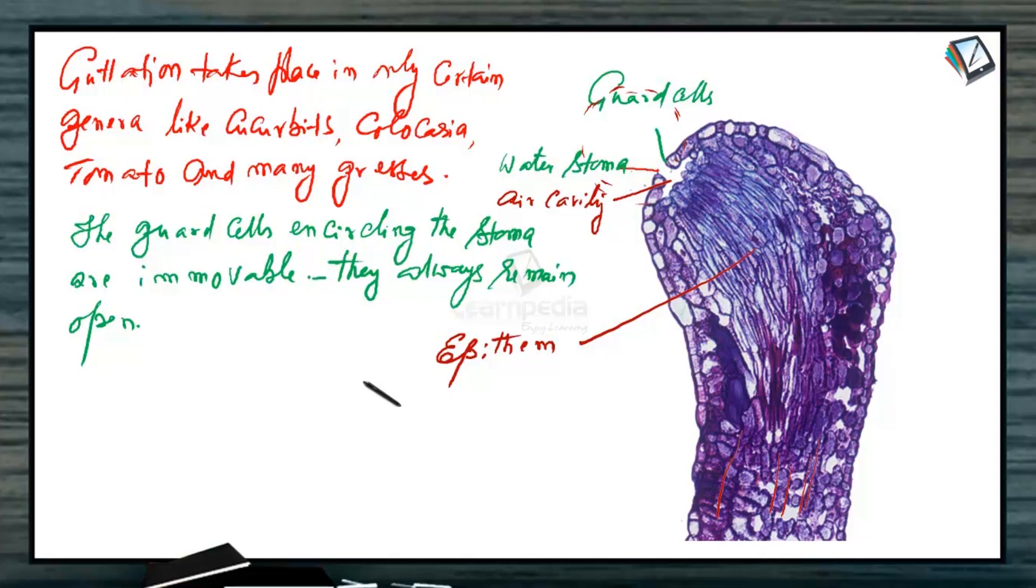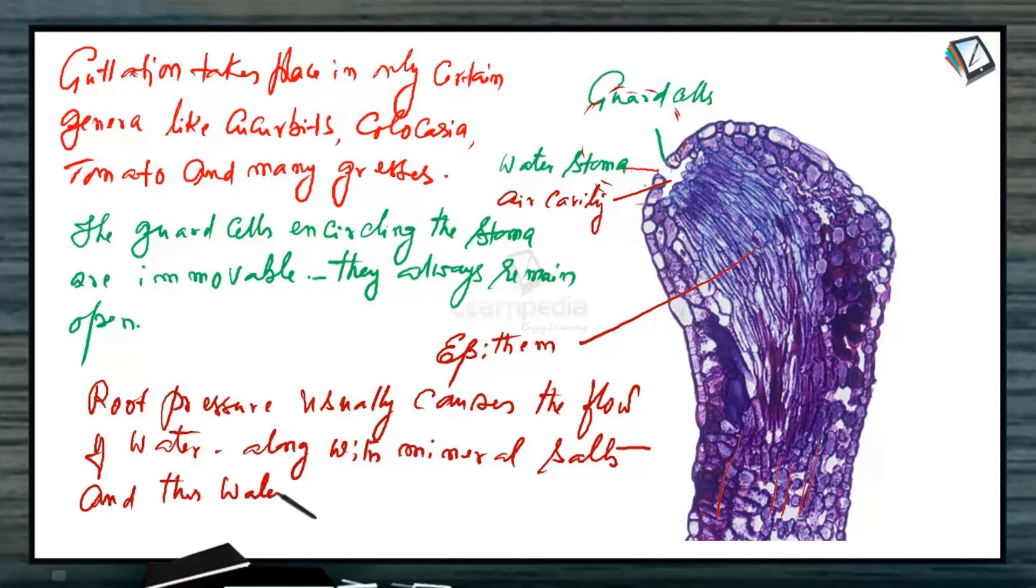This process is called guttation. Root pressure usually causes the flow of water, of course along with mineral salts and this water only accumulates outside the hydathodes.